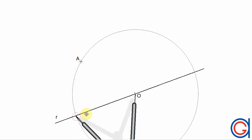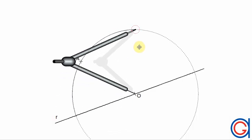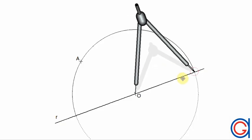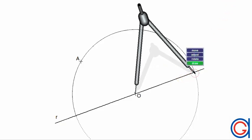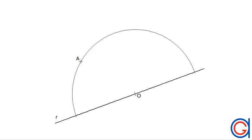Now with our compass set on this point zero and length zero A, we draw a semicircle which cuts our line R at two points. We will call these two points P and Q, as can be seen here in the video.